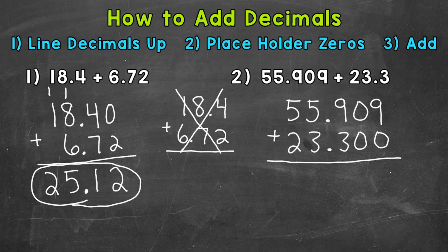So, 9 plus 0 is 9. 0 plus 0, 0. 9 plus 3 is 12. Regroup or carry the 1. Our decimal comes straight down. Then, we add the 1's. 1 plus 5 is 6, plus 3 is 9.